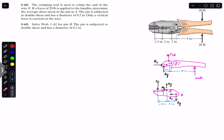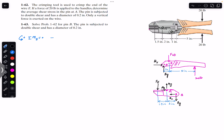Similarly at B, since it's a pin joint, we will have Bx and By. Now if we apply the equilibrium conditions for this free body diagram — the sum of moments about point B equals zero — considering counterclockwise moment as positive, FCD is producing a clockwise moment about point B, so it is negative. We write minus FCD, and the moment arm of FCD from point B is one inch.